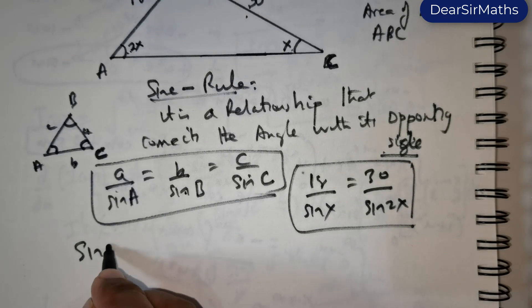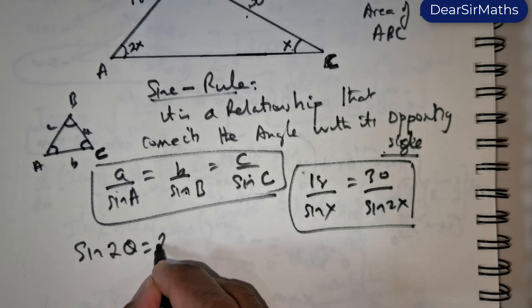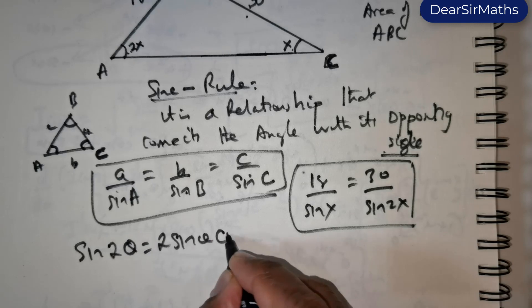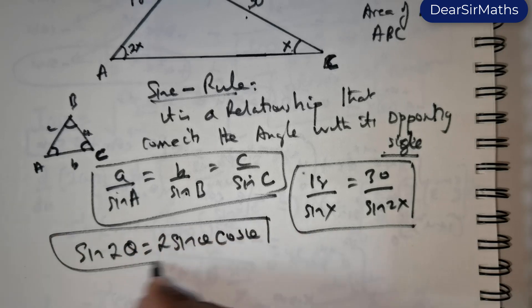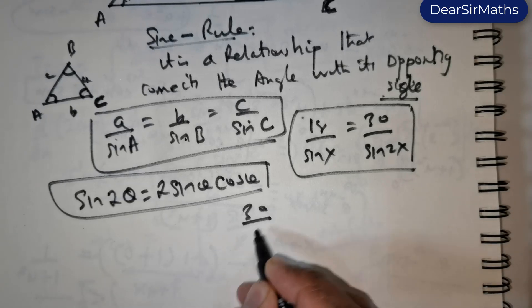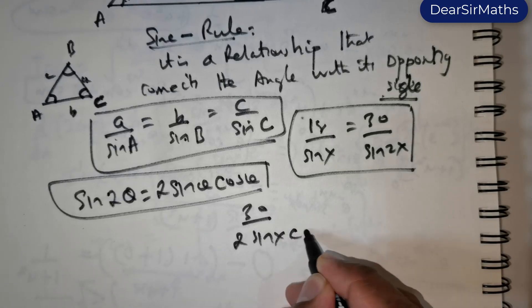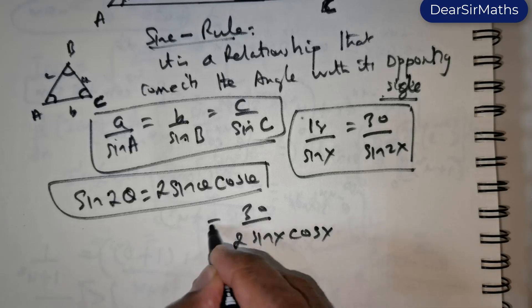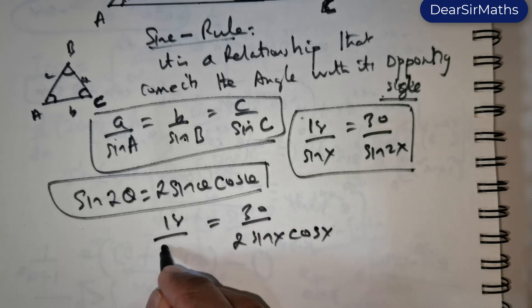Now there is a trigonometric formula which states as follows: sin 2θ is equal to 2 times sin θ times cos θ. I am going to utilize this formula. So I can rewrite sin 2x as 30 over 2 times sin x times cos x equals 18 over sin x.